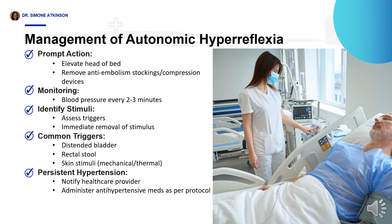To address autonomic hyperreflexia, the nurse promptly elevates the head of the bed and removes any anti-embolism stockings or sequential compression devices. Blood pressure monitoring should occur every two to three minutes while identifying and assessing stimuli that triggered the response. Once the stimulus is identified, it should be immediately removed. Stimuli such as a distended bladder, stool in the rectum, or mechanical or thermal stimuli affecting the skin can provoke autonomic hyperreflexia. If severe hypertension persists despite removing the offending stimulus, the healthcare provider must be notified immediately and anti-hypertensive medications administered per protocol.